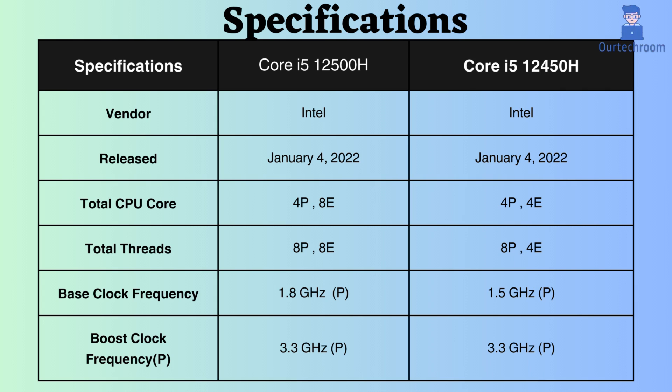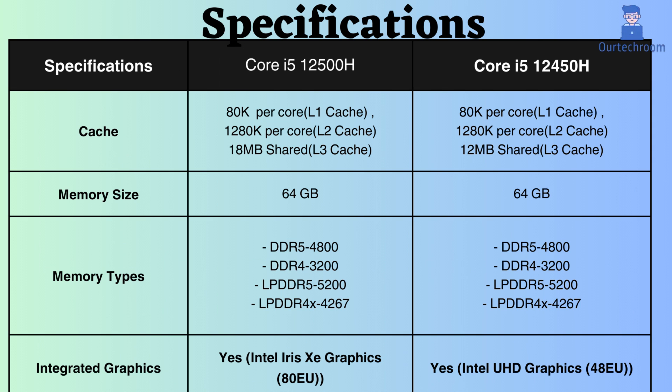The base clock frequency for the performance cores of the Intel Core i5-12500H is 1.8 GHz, compared to 1.5 GHz for the Core i5-12450H. Both processors have a boost clock frequency of 3.3 GHz. They have the same L1 and L2 cache size of 80 KB per core and 1,280 KB per core, respectively. However, the L3 cache of the Core i5-12500H is 18 MB, while that of the Core i5-12450H is 12 MB. The larger L3 cache of the Core i5-12500H can benefit multitasking and handling large datasets.